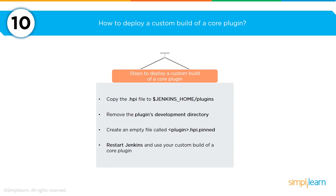You'll be asked how to deploy a custom build of a core plugin in Jenkins. There are four steps: first, copy the .hpi plugin file into the Jenkins home plugins subdirectory; second, remove the plugins development directory if one exists; third, create an empty file called plugin.hpi.pinned; and fourth, restart Jenkins — your custom built plugin should then be available.